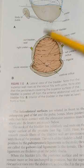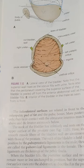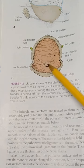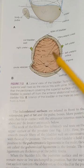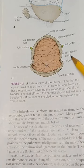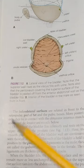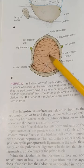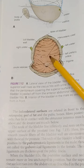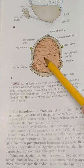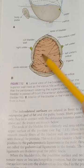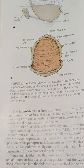The rugae reappear once the bladder is empty. The oblique penetration of the ureter into the bladder wall prevents reflux of urine — there is no anatomical valve. At the inferior angle of the trigone is the internal urethral orifice, also called the vesical orifice. This orifice is provided by circular smooth muscles forming the internal urethral sphincter.